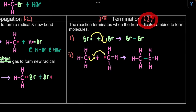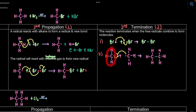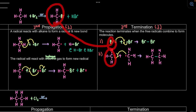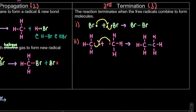Remember termination has three steps. The third one is where we combine CH3 with bromine radical - the alkyl radical with bromine. We combine these two to form our main product. So we have to show it. That is the third termination step.